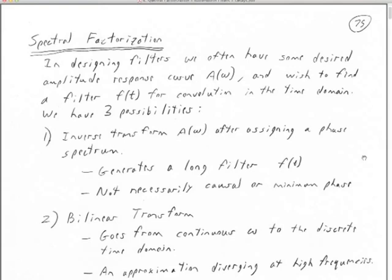Butterworth filters are very popular — they're kind of a workhorse filter. They have all these nice characteristics: they're easy, quick, causal, real, and invertible. My whole objective with this class is to give you a deep understanding of something as fundamental as a Butterworth filter, so that if it's not working for your data sets, you know how to go and design a whole new way of filtering. If you know how to invent a Butterworth filter, you'll also know how to invent some new filter or new concept of filtering.